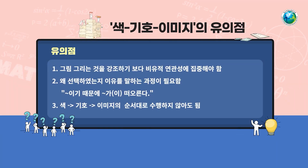색, 기호, 이미지 기법으로 수업할 때 유의할 점은 다음과 같습니다. 미술적 표현을 잘하는 것보다 아이디어를 비유적으로 표현하는 것에 중점을 두어야 합니다. 따라서 선택한 이유를 적고 말하는 과정이 필요합니다. 또한 진행할 때 색, 기호, 이미지의 순서는 꼭 지키지 않아도 되며 경우에 따라 생략할 수 있습니다. 언어 표현이 서툰 저학년 학생들은 색만 선택해보는 방법 등으로 자신의 아이디어를 비유적으로 표현할 수 있습니다.